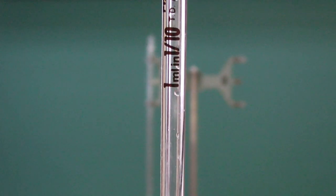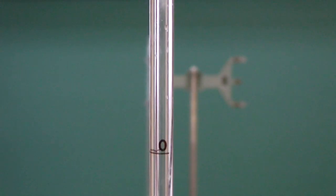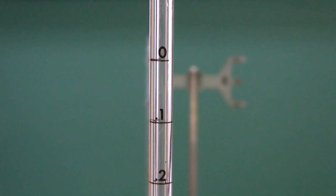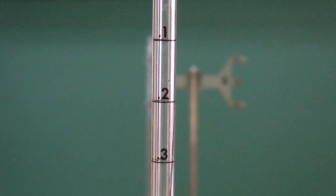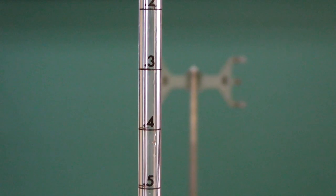This is the 1 milliliter mohr pipette. As you can see, it has increments every 0.1 of a milliliter. Don't forget to read one more decimal place, therefore to two decimal places, when using these pipettes.